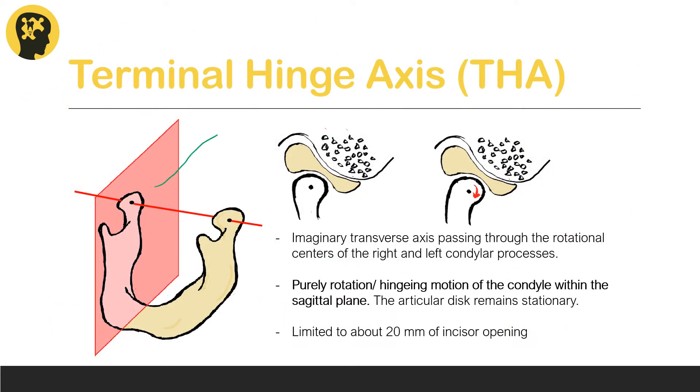Here we have the sagittal plane and the transverse or horizontal axis perpendicular to the sagittal plane. As we discussed previously, as we begin to open our mouth, the condyles just rotate in place about this transverse or horizontal axis. Because it is a pure rotation movement, it's called the terminal hinge axis, because hinge means rotation. This rotation occurs about the sagittal plane for about 20 millimeters of incisor separation.